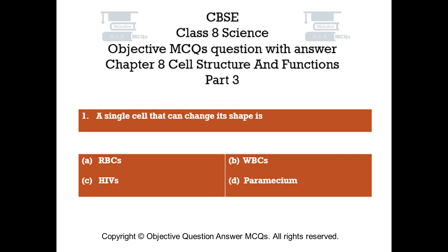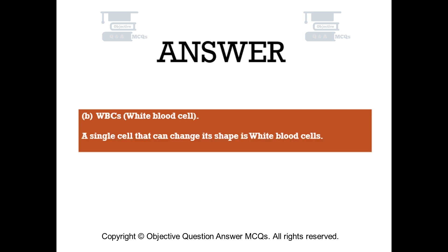Question number 1: A single cell that can change its shape is — Option A: RBCs, Option B: WBCs, Option C: HIVs, Option D: Paramecium. The right answer is Option B: WBCs (White blood cells). A single cell that can change its shape is white blood cells.